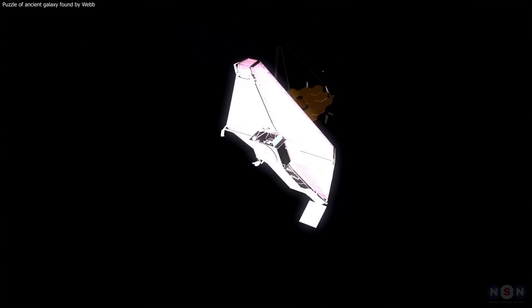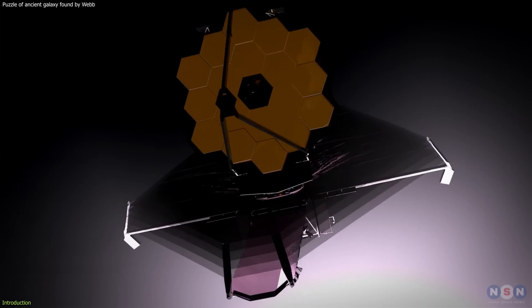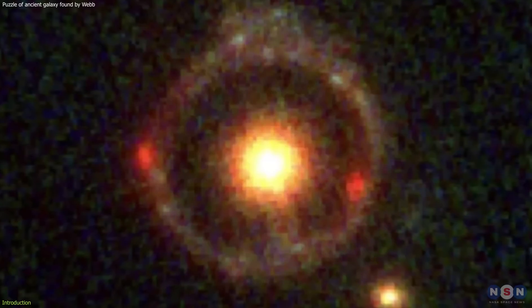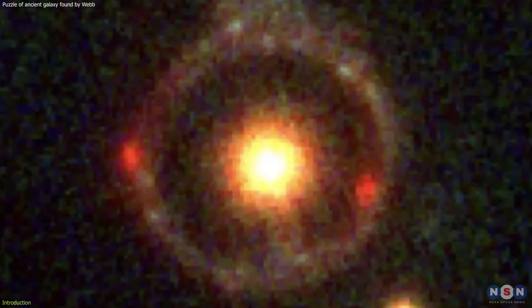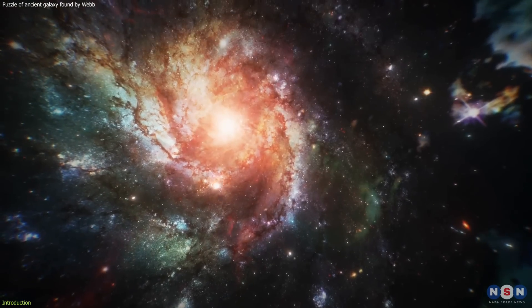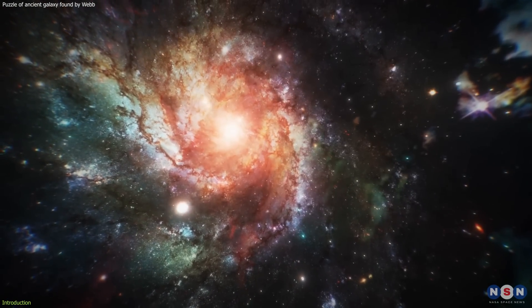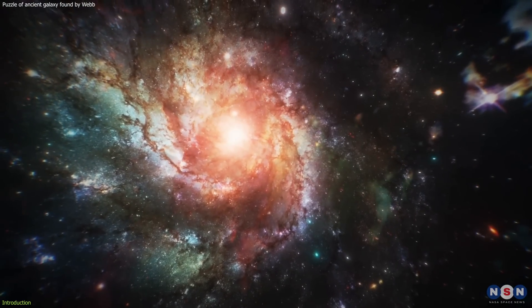Last September, the James Webb Space Telescope made a remarkable discovery. It uncovered JWST-ER1G, a colossal ancient galaxy that came into being when the universe was merely a quarter of its present age.